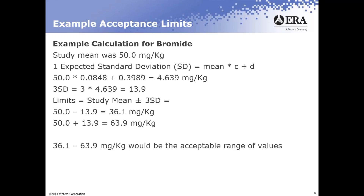So in your PT, if you report a value within those numbers you'll get an acceptable result; outside those numbers you'll get a not-acceptable report. One of the benefits is that you're truly being judged against your peer laboratories. With this in mind, it's very important to run samples exactly as the methods are written. For some products there are specific methods that need to be followed, and I'll explain how deviating from those can affect your analyses.